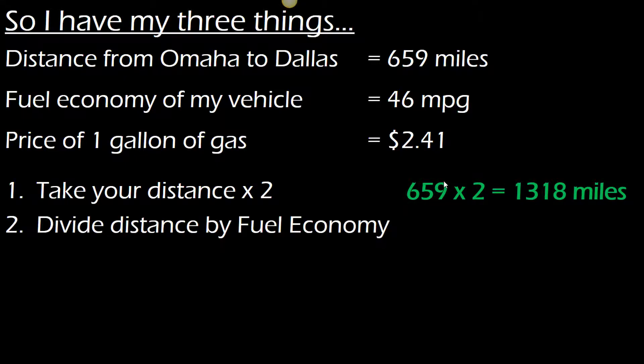Step two: take your distance divided by fuel economy. If your car goes 46 miles on one gallon of gas, then we can use division to calculate the total number of gallons we will need on our trip. So during this trip we're going to use 28.6 gallons of gas.